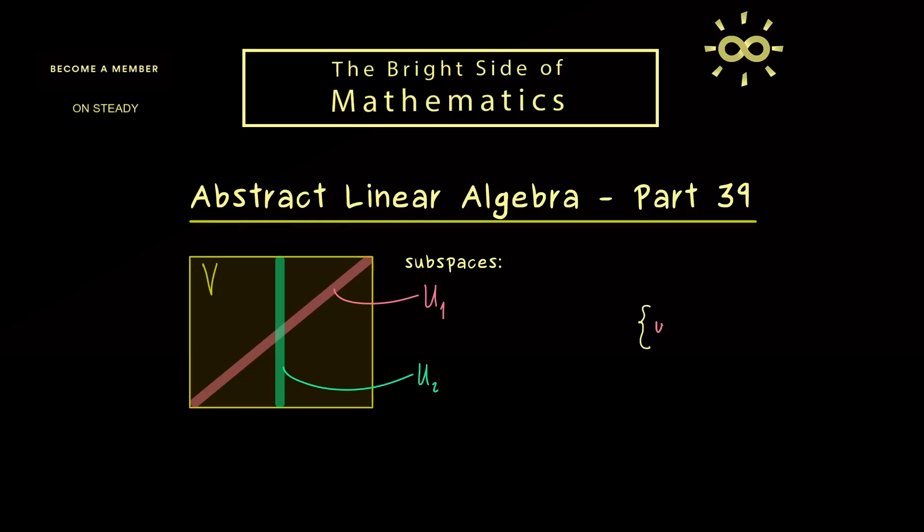Therefore the correct definition for the new subspace would be to take all possible linear combinations in one set. And now it should be clear that every linear combination can be written with exactly two vectors. We just have to take one from U₁ and one from U₂ and add them.